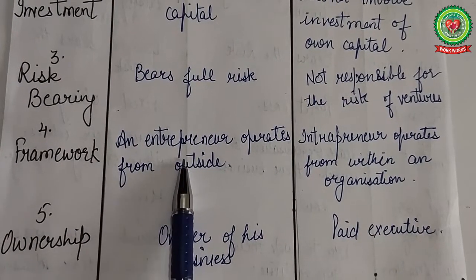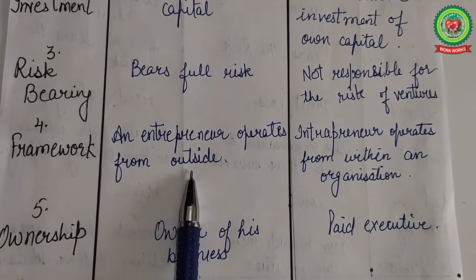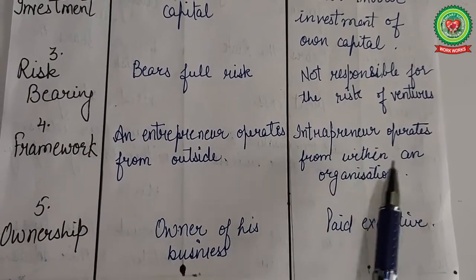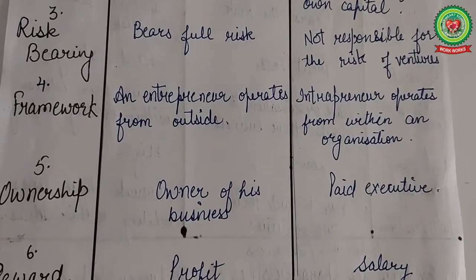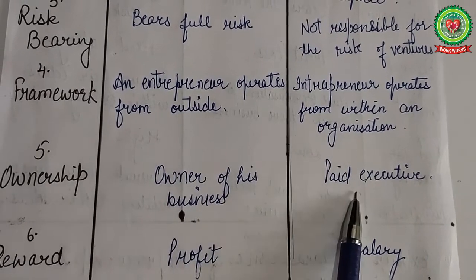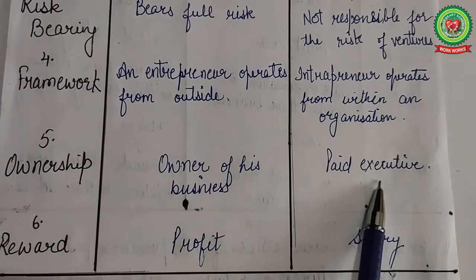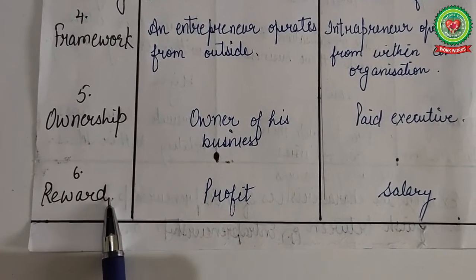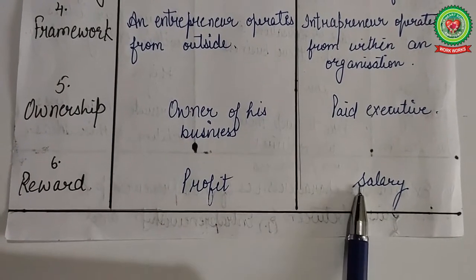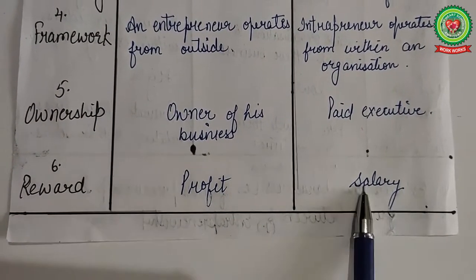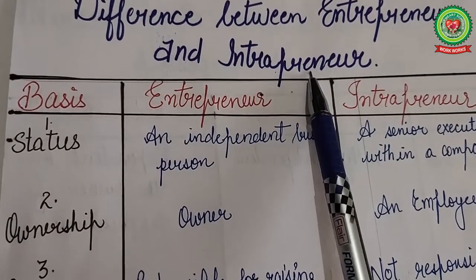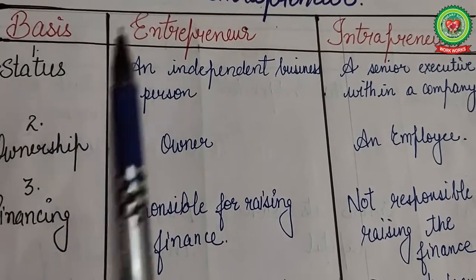Fourth, framework — an entrepreneur operates from outside, whereas an intrapreneur is an organization person and operates from within an organization. Fifth, ownership — an entrepreneur is the owner of their own business, but an intrapreneur is a paid executive of the company. Sixth, reward — profit is the reward of entrepreneurship, whereas salary is the reward of intrapreneurship.